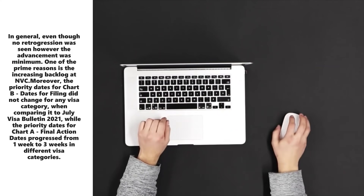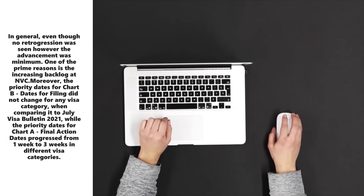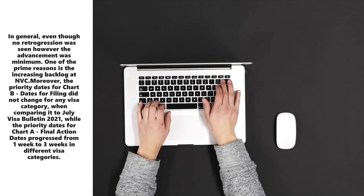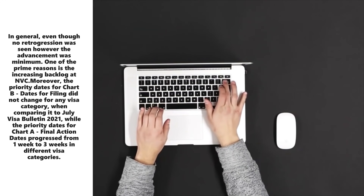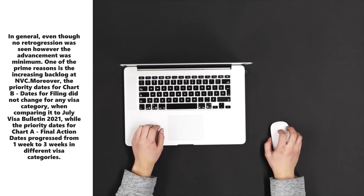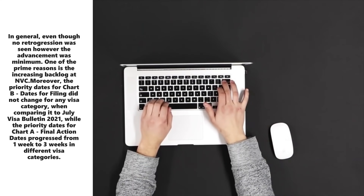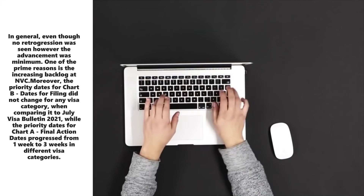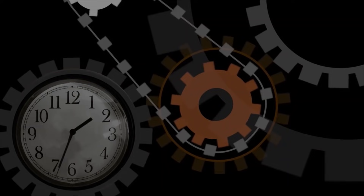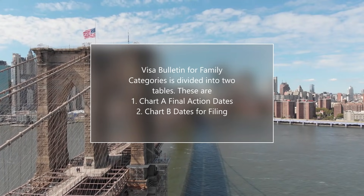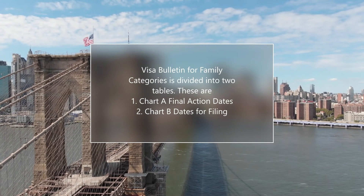Even though no retrogression was seen, the advancement was minimum. One of the prime reasons is the increasing backlog at NVC. Moreover, the priority dates for Chart B — that is, dates for filing — did not change for any visa category when comparing to the July visa bulletin 2021. The priority dates for Chart A final action dates progressed from one to three weeks in different visa categories. The visa bulletin is divided into two tables: Chart A final action dates, and Chart B dates for filing.